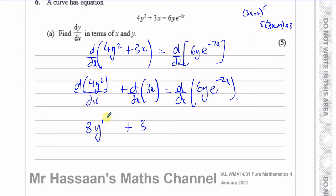There is a function inside this function: the function is y, and y is a function of x. The differential of y is dy/dx. So I multiply by dy/dx. That gives 8y dy/dx for the differentiation of 4y-squared. Now for the product term, I have to use the product rule. Let u equals 6y and v equals e to the power of minus 2x.